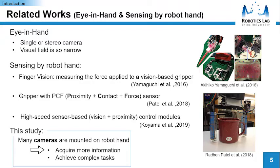Examples of sensing by robot hand: Patel et al. proposed a dynamic tactile sensor that combines proximity, contact, and force sensor, and applied it to robotic grasping. Yamaguchi et al. proposed finger vision, a method for measuring the force applied to a vision-based gripper. Koyama et al. demonstrated high-speed grasping of flexible objects by high-speed camera and high-speed proximity sensor.